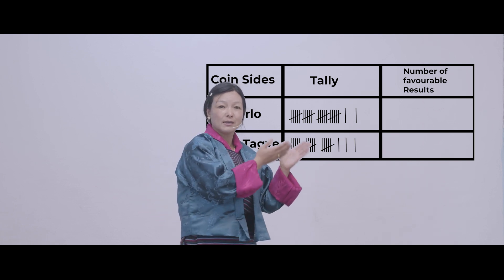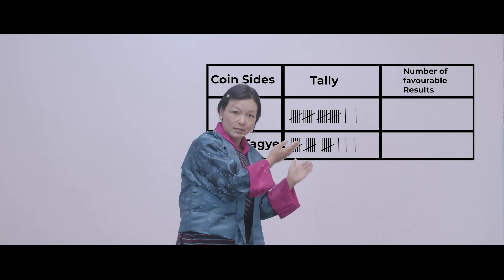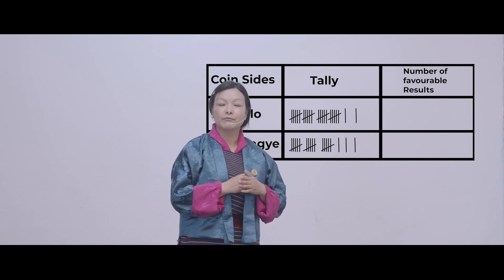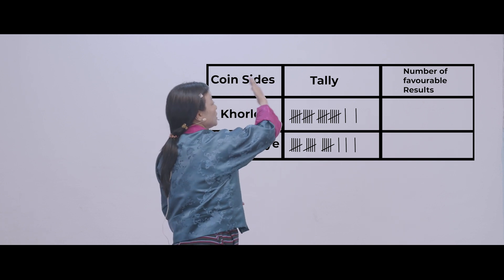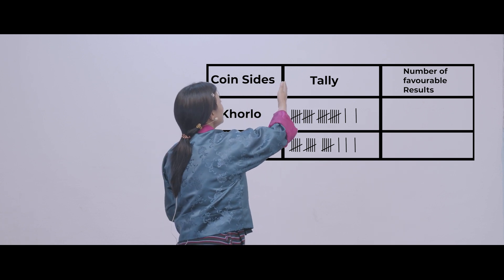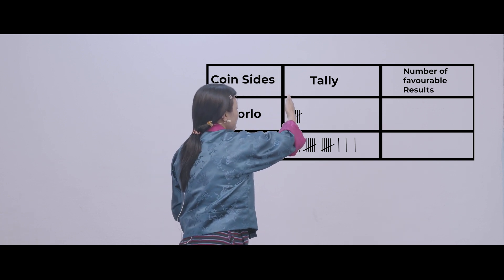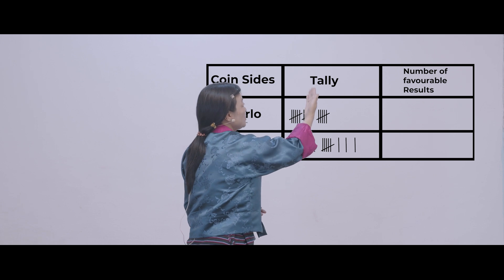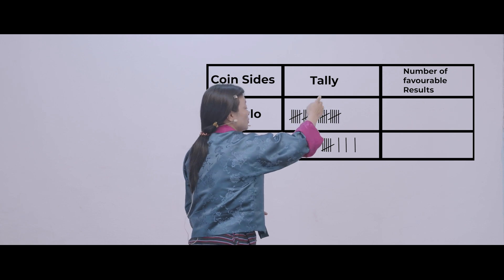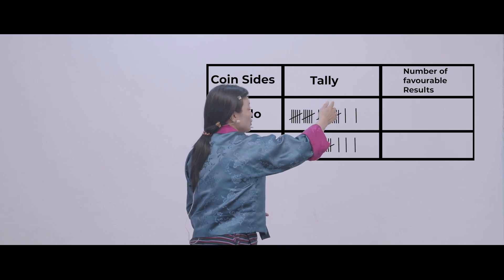Now should we count the events that you have got? First, khorlo — count: 5, 10, 15, 20, 21, 22.